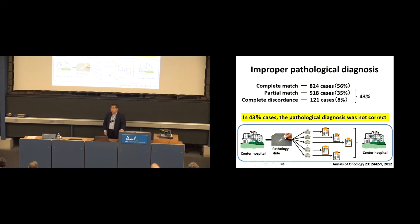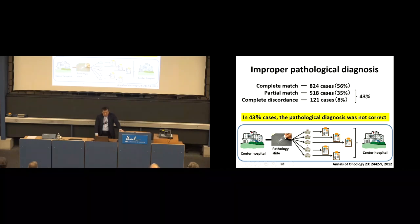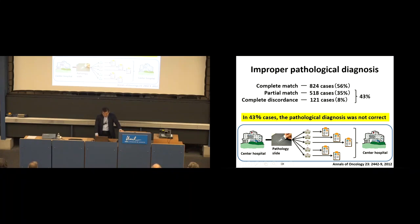Making a diagnosis is very difficult in the case of rare cancers. Because of the small number of patients, pathologists cannot gain enough experience diagnosing rare cancers. In this study, pathologists in central hospitals distributed pathological slides of rare cancers to pathologists in community hospitals to see how well they could make a correct diagnosis. In 43% of cases, the pathologist in the local hospital made a wrong diagnosis — and based on a wrong diagnosis, doctors cannot achieve the best treatment for the patient.